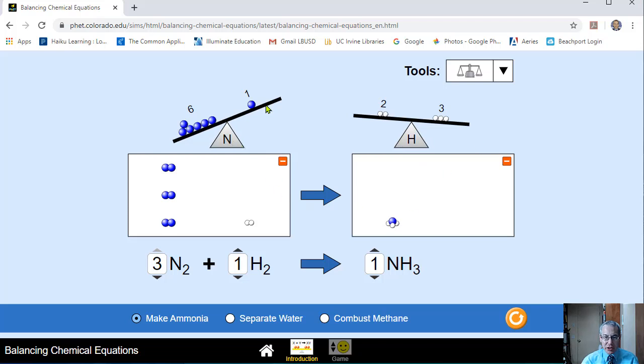Nitrogen is not in balance. The left side of the teeter totter is the left side of the chemical equation. The right side of the teeter totter is the right side of the chemical equation. Same with this hydrogen seesaw.